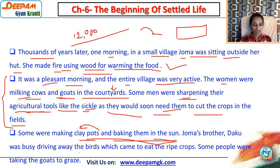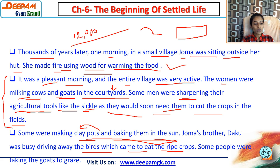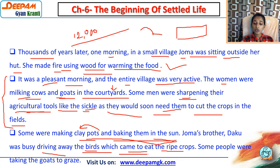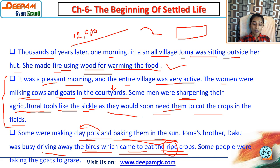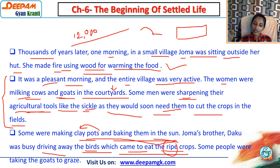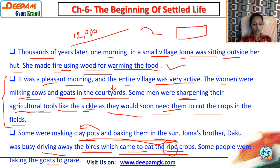Joma's brother Daco was busy driving away birds which came to eat their ripe crops. Since they had started farming, when crops were ready, birds would come to eat them. His brother was driving the birds away. Some people were also taking goats to graze in the fields.